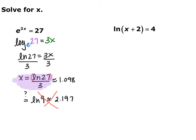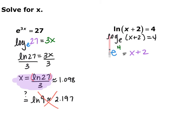We can also solve logarithmic equations. For the natural log of x plus 2 equals 4, switch this into exponential form. Natural log is the same as log base e, so the base is e, and input and output switch: e to the 4th equals x plus 2. Since e to the 4th is just a number, subtract 2 from both sides: x equals e to the 4th minus 2, which is the exact answer. To solve for something inside an exponent, switch to logarithmic form; to solve for something inside a logarithm, switch to exponential form.